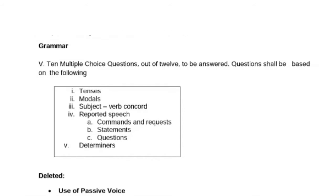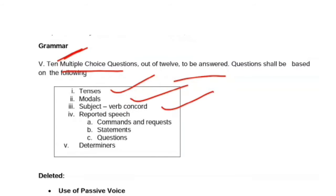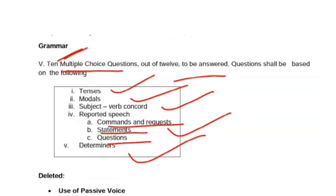From grammar, multiple choice questions will also be asked — 12 questions will be given and you have to attempt any 10. The topics from which questions will be asked are: first, Tenses; second, Modals; third, Subject-Verb Concord; fourth, Reported Speech (which includes three types: commands and requests, statements, and questions); and fifth, Determiners. These are the five topics from which grammar questions will be asked.